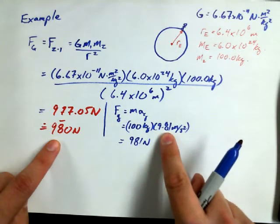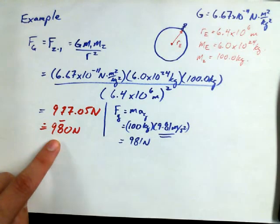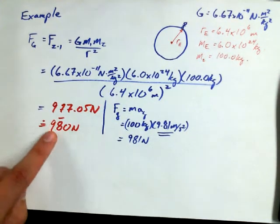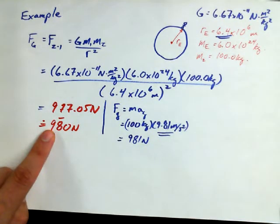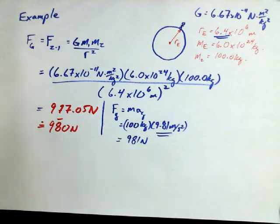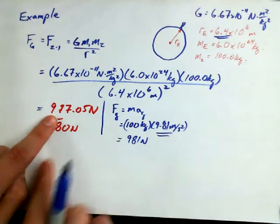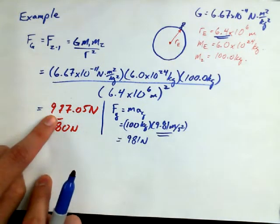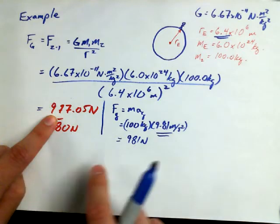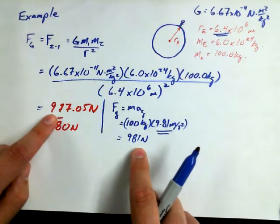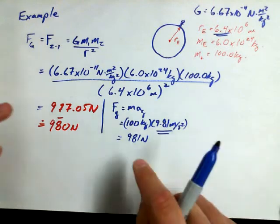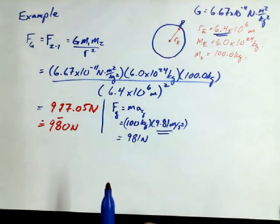Is this an average value or a local value? That's a local value. This value here was determined by an average planetary radius, though. So, on average, you're going to feel about 977 newtons anywhere on Earth, if you're 100 kilograms. If you happen to be in our neighborhood, you're going to feel 981. That's all.